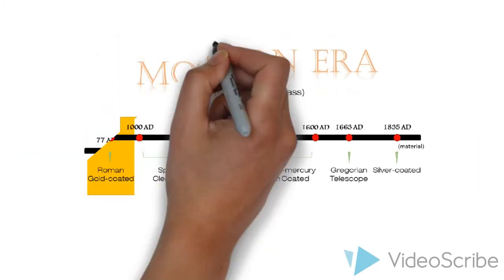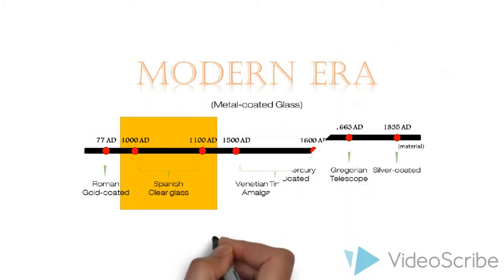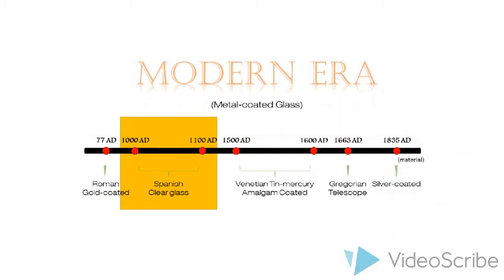By the 11th century, glass mirrors with clarity that is on par with today's mirrors were being produced in Moorish Spain.